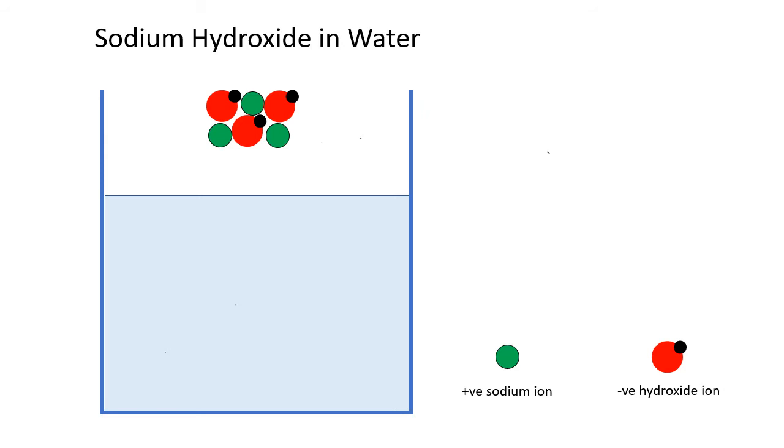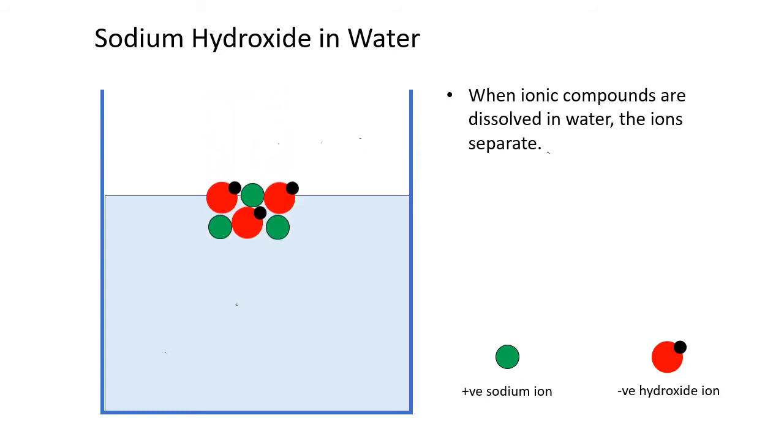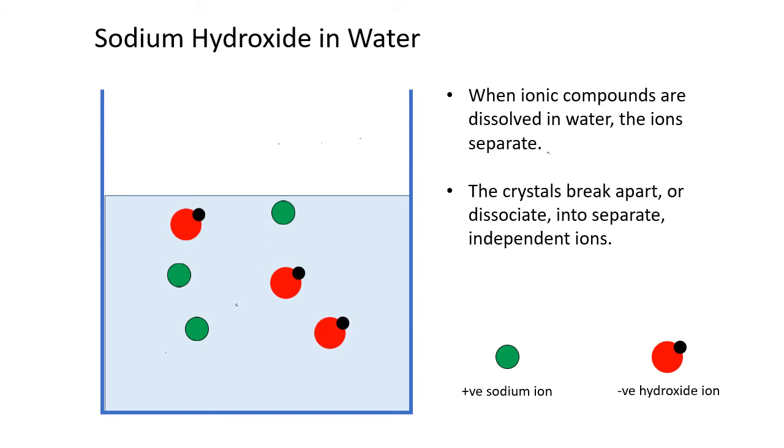Let's drop our crystal of sodium hydroxide in the water. When it does, of course, we know the ions are going to separate. So now instead of crystals of sodium hydroxide, those crystals have broken apart or dissociated, and we have separate independent positive sodium ions and negative hydroxide ions all floating around in the water. We have our ion soup.